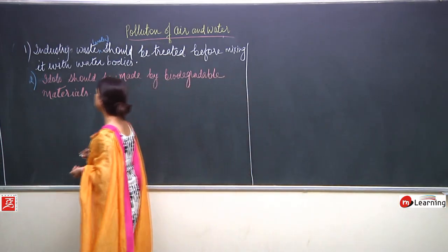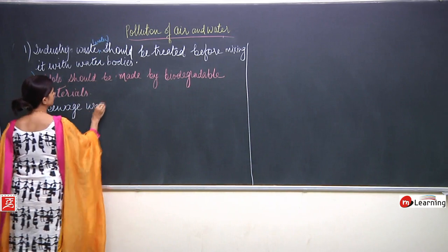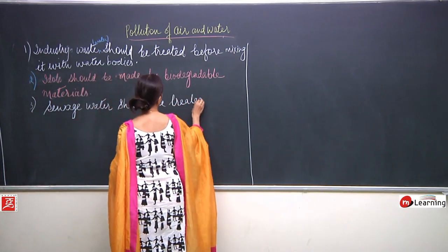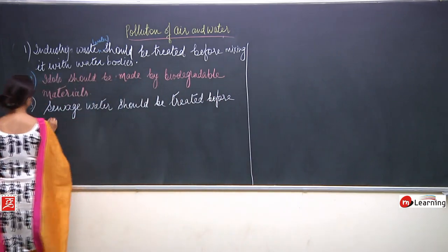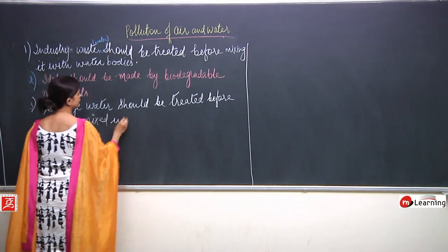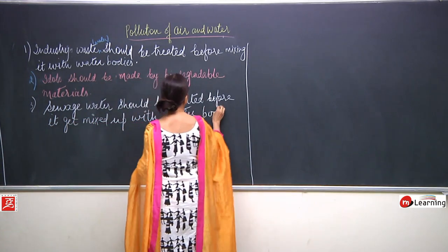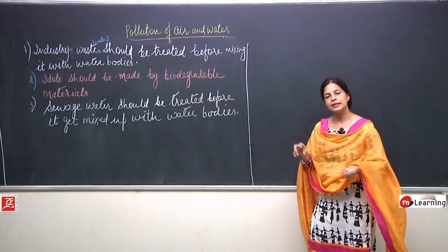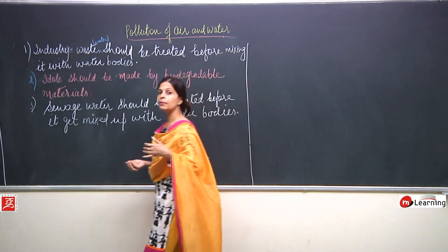The third point: sewage water should be treated before it gets mixed with water bodies. We have discussed how dirty polluted sewage water, when it mixes with river water or water bodies, causes pollution. By treating sewage water, we can reduce pollution to a greater extent.